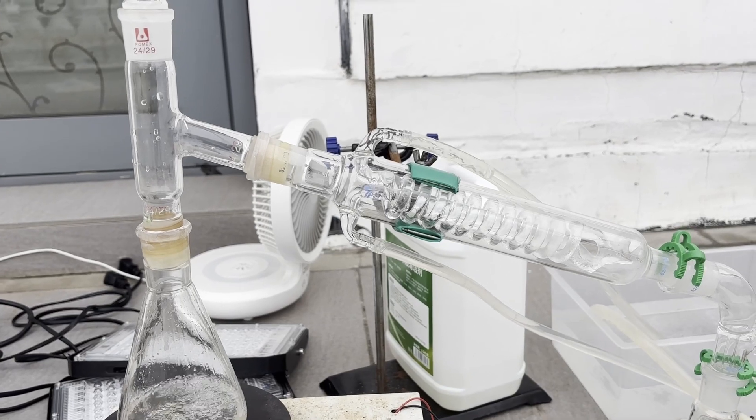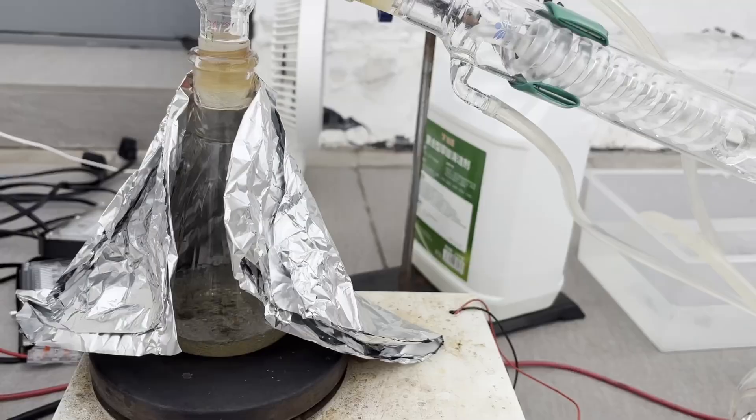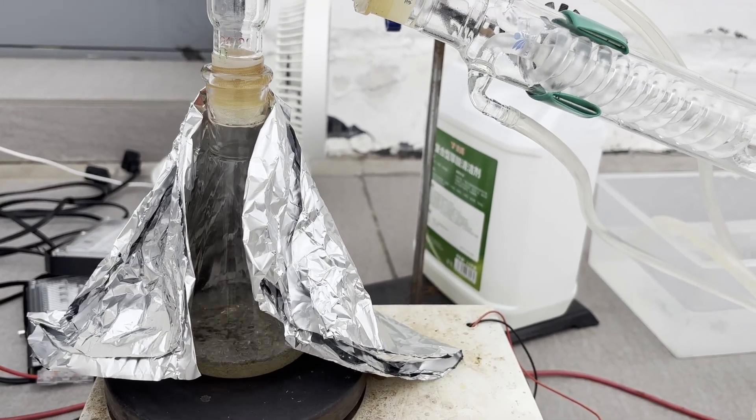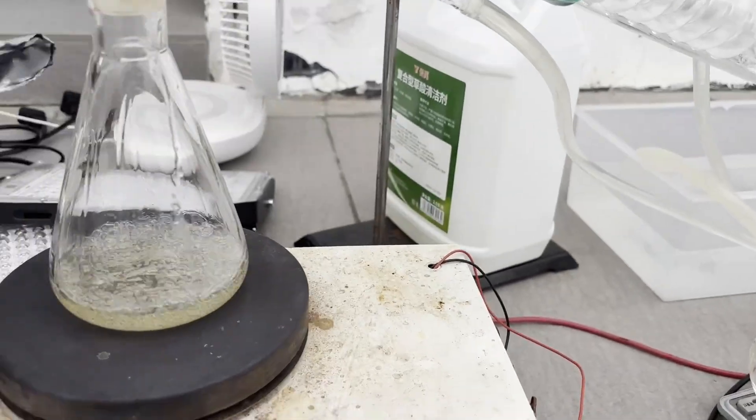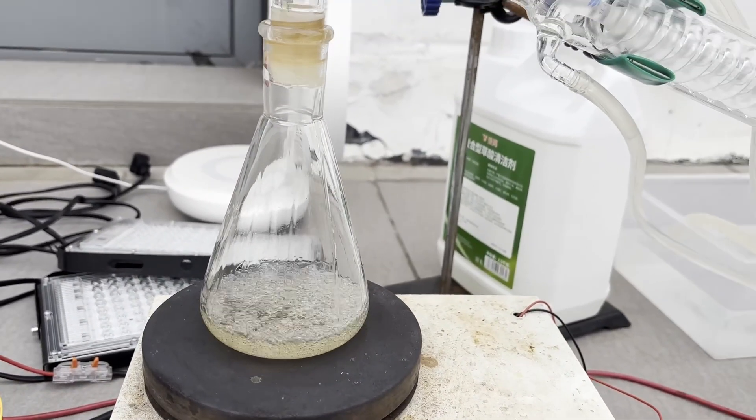The distillation was quick, and after 30 minutes, some syrupy, slightly yellow liquid was left in the flask. Pure triphosgene is colorless, but the flask had some tar at the bottom which colored the triphosgene, but that is only minimal.